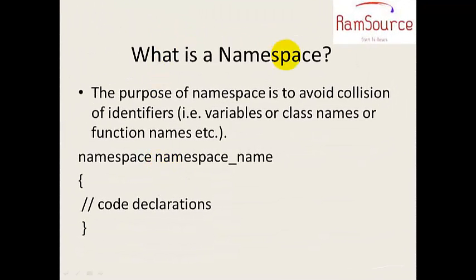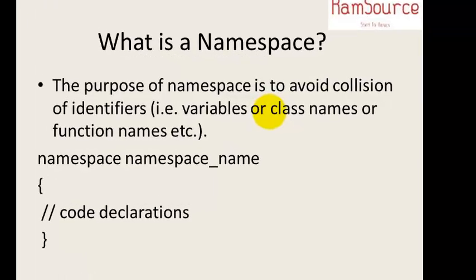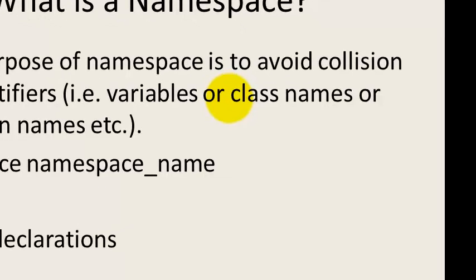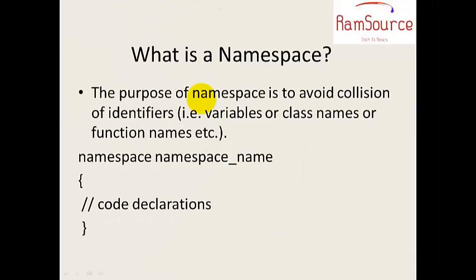So first, what is a namespace? Let's talk about namespace with real-time examples. For example, in a classroom there are two students with the same name. For example, David is the boy's name. Now let's talk about the class teacher — there will be confusions, name confusions, name collisions.